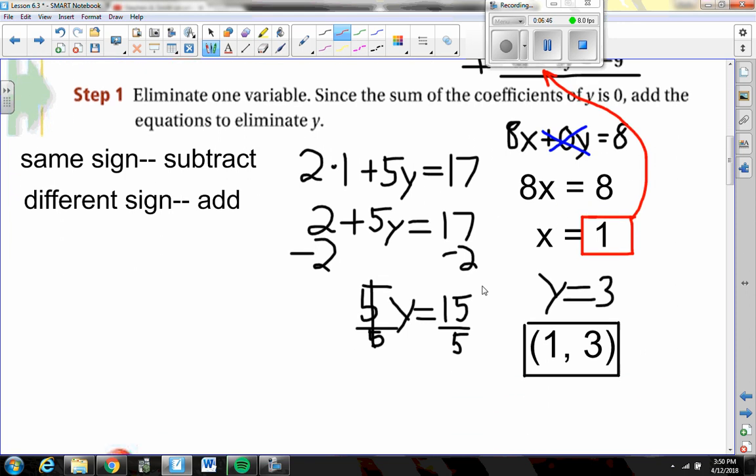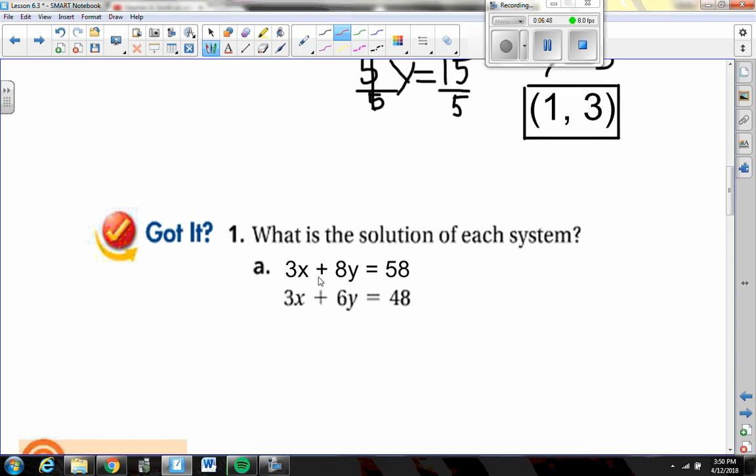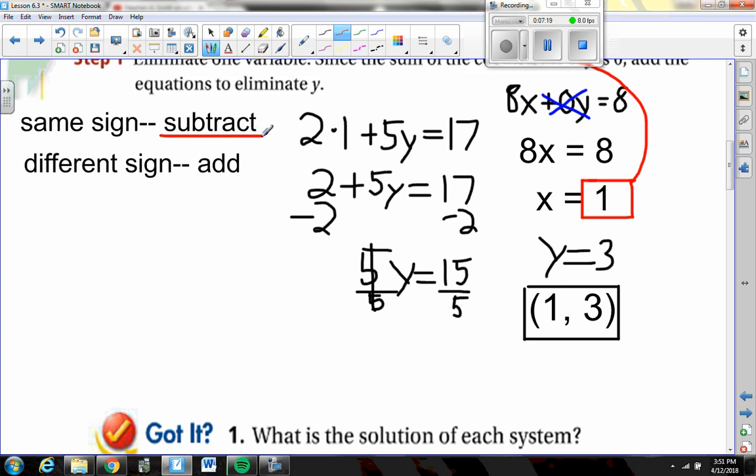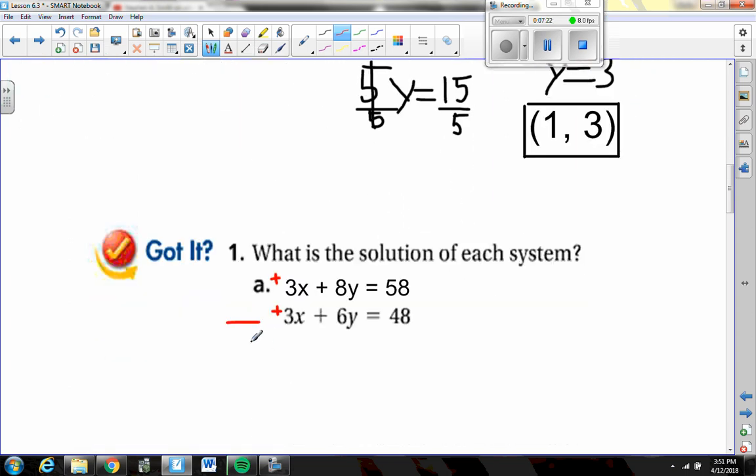The other option is we could end up with a situation like this where I have 3X plus 8Y equals 58 and 3X plus 6Y equals 48. Well, now I do have the same number on one of my variables. This time it happens to be the X. But now the threes on the X's are both positive. So, that means they have the same sign, right? They're both positive numbers, positive and positive. Well, if I have the same sign, what do I need to do with my two equations? Same sign, I need to subtract my two equations.